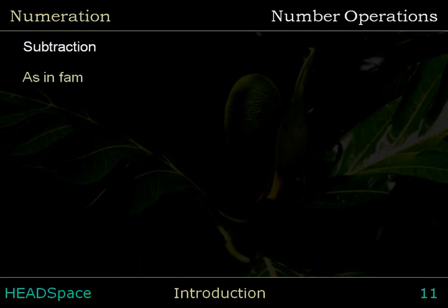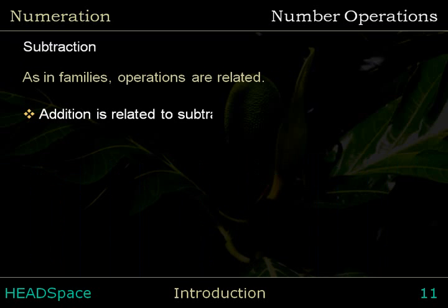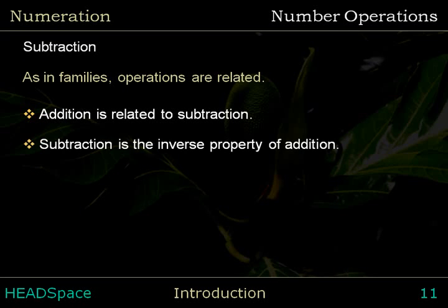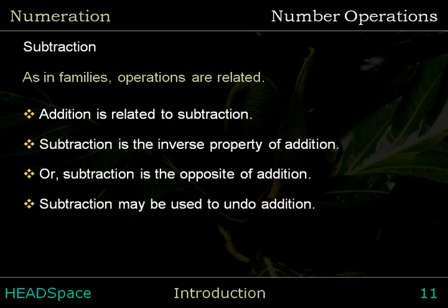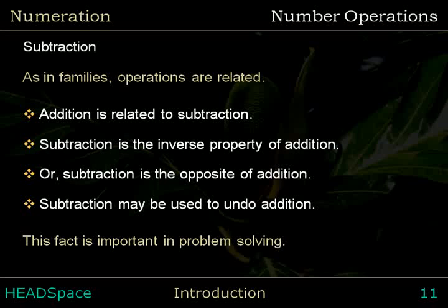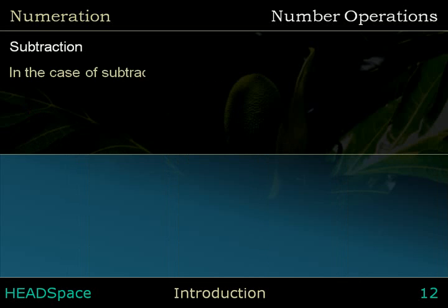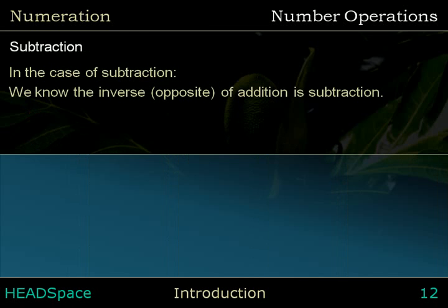As in families, operations are related. Addition is related to subtraction. Subtraction is the inverse property of addition — or subtraction is the opposite of addition. Subtraction may be used to undo addition. This fact is important in problem solving. In the case of subtraction, we know the inverse, or opposite, of addition is subtraction.